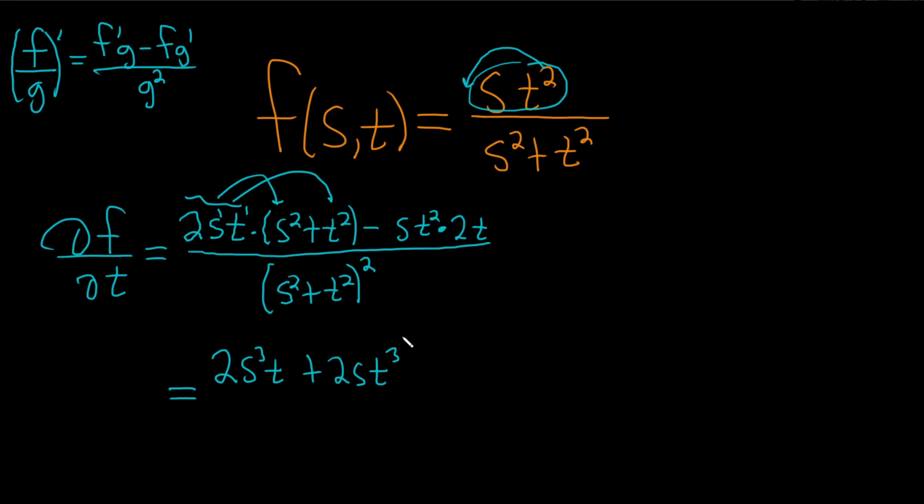And then this is minus 2t cubed s. S t cubed. And it's all over s squared plus t squared squared. It'd be easier if it was x and y.